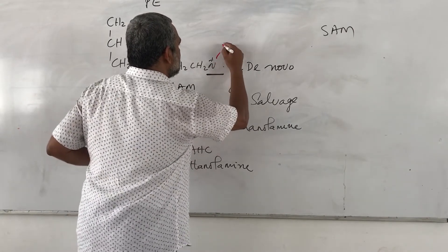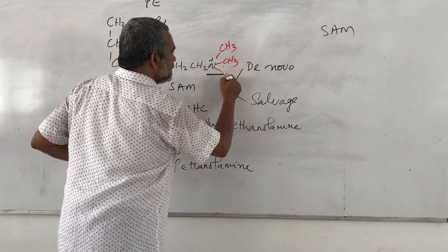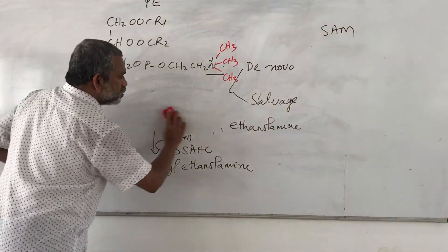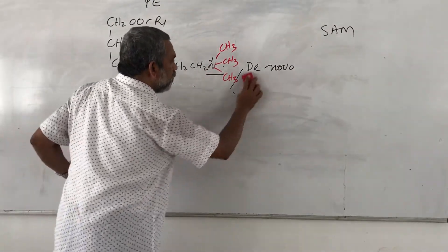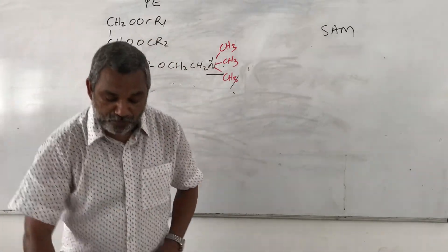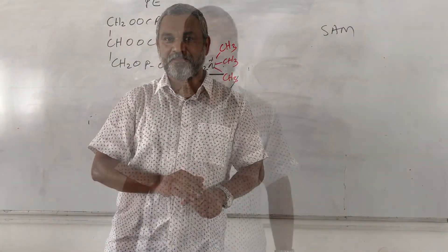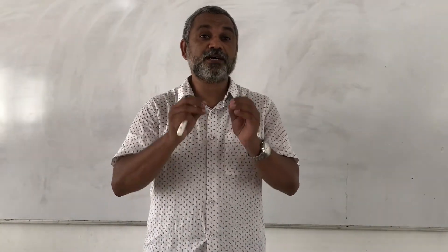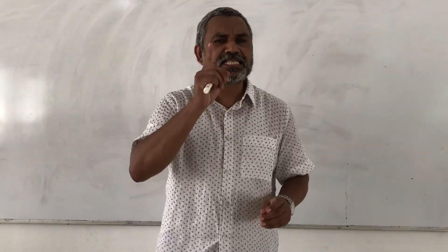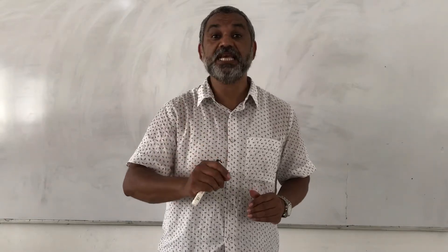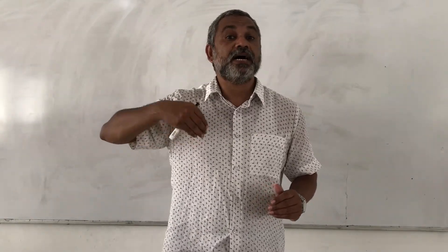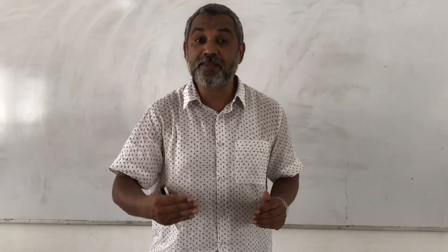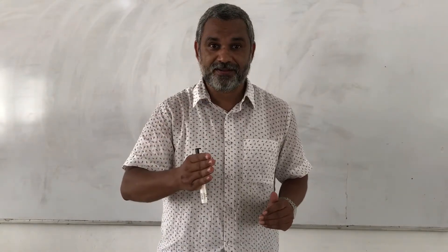Adding the third methyl group yields phosphatidyl trimethylethanolamine, which is phosphatidylcholine. The structure shows four methyl groups on the nitrogen: CH3, CH3, CH3, CH3. This is the de novo pathway for the synthesis of phosphatidylcholine. In this pathway, just one enzyme — methyltransferase — continuously and repeatedly adds methyl groups to phosphatidylethanolamine to make phosphatidylcholine. That is the beauty of it.